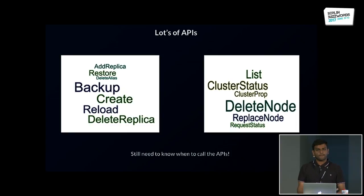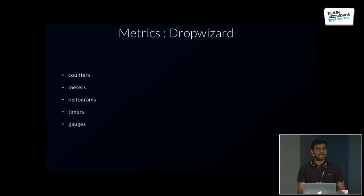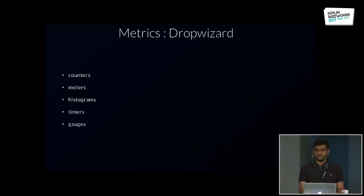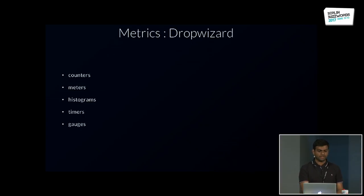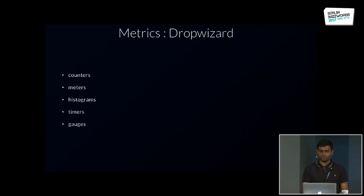Another issue with APIs is we don't have much insight as to when to use them — like at what point should we add more replicas because we're getting a lot of queries. Solr always had some metrics exposed through JMX and a REST endpoint, but in the 6.3 through 6.5 releases we overhauled how metrics work. We collect a lot more metrics now using a library called Dropwizard Metrics, which helps us collect more information that you can consume in your monitoring tools or via a REST endpoint.